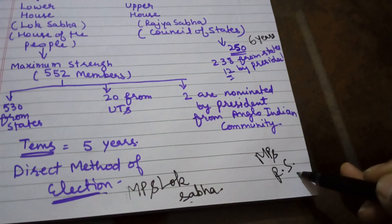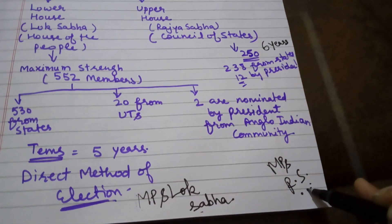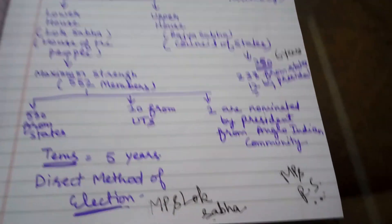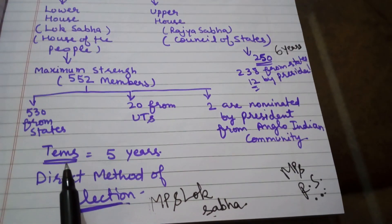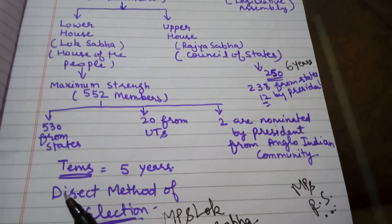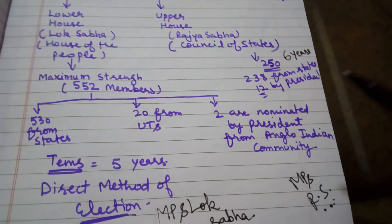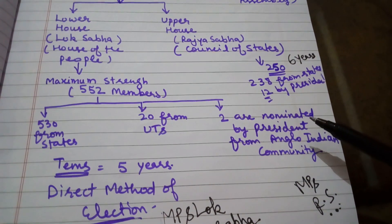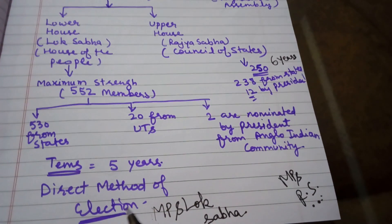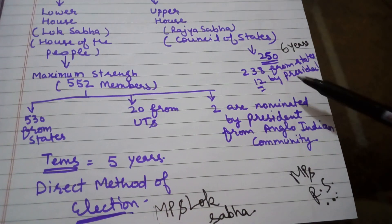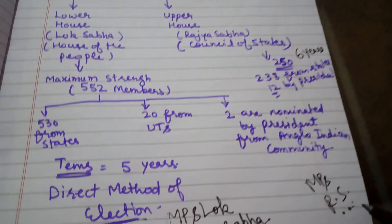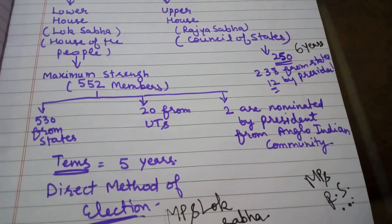To summarize the main differences between the lower and upper house: Lok Sabha's tenure is five years and Rajya Sabha's tenure is six years. Lok Sabha is elected through the direct method of election and Rajya Sabha is elected through the indirect method. Members of Lok Sabha are known as MPs Lok Sabha and members of Rajya Sabha are known as MPs Rajya Sabha. Further topics from this chapter will be covered in the next video.